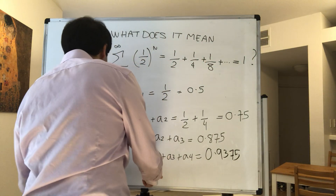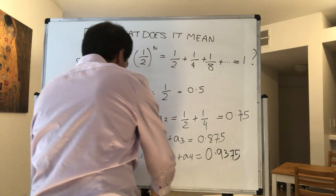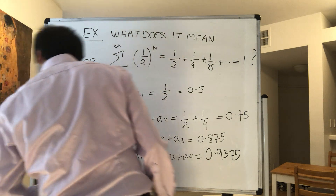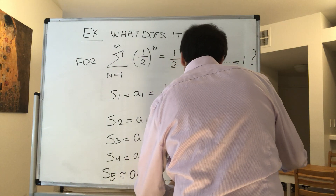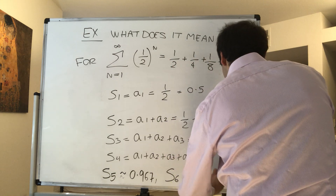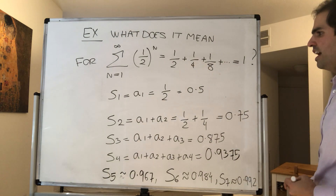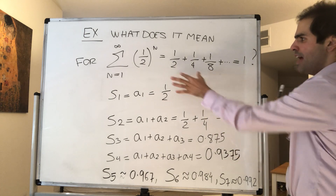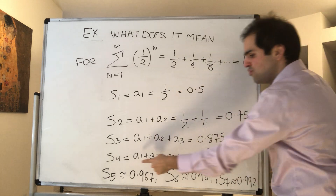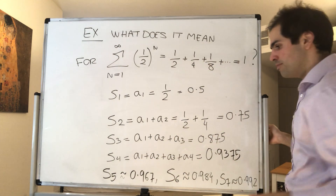And then you can continue. You can take the sum of the first five terms, which is roughly 0.967. And S_6 is 0.984. Even better, S_7 is roughly 0.992. So again: S_1 is just the first term, S_2 is the sum of the first two terms, S_3 is the sum of the first three terms, S_4 is the sum of the first four terms — five terms, six terms, seven terms, etc.